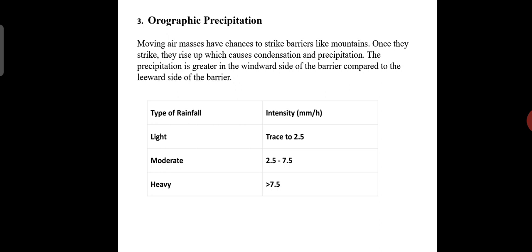Here you can see the types of rainfall and their intensity: light, moderate, and heavy. In light rainfall, the intensity traces about 2.5 mm. In moderate, it is about 2.5 to 7.5 mm. But in heavy, it is greater than 7.5 mm.